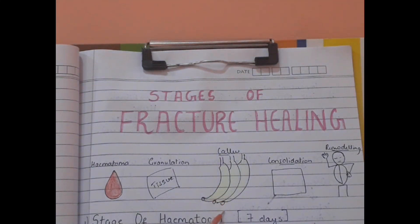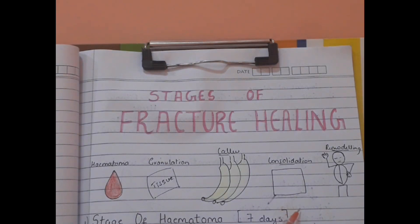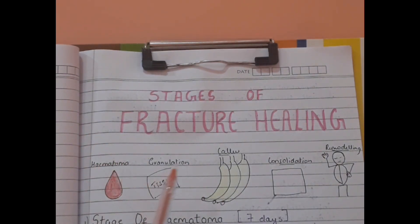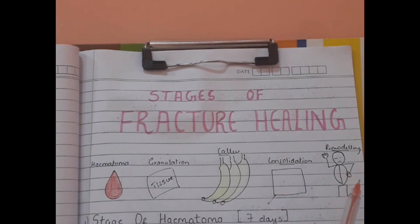Callus is for 'kela,' and kela means banana. Next, how was the kela? It was solid — so stage of consolidation. And then lastly, who asked you about the kela? The model asked you — so the stage of remodeling. So: hematoma, granulation tissue, callus formation, consolidation, and remodeling.